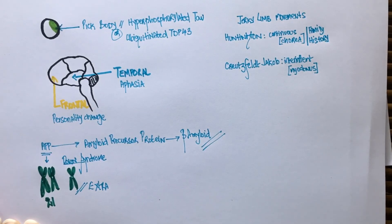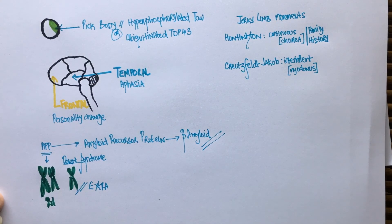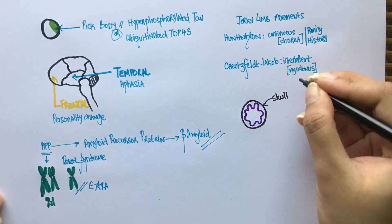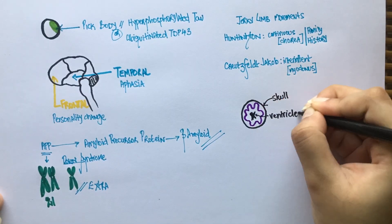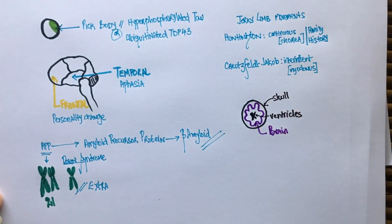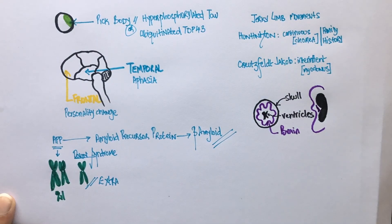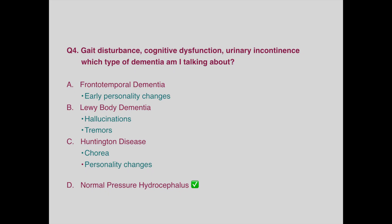In my previous video on dementia, I mentioned an easy way to remember normal pressure hydrocephalus. It is by identifying the triad of gait disturbance, cognitive dysfunction, and urinary incontinence. The enlarged ventricle size in these patients compresses the adjacent brain tissues, leading to the symptoms seen in normal pressure hydrocephalus. Patients with Lewy body dementia might have gait disturbances, but urinary incontinence is not a characteristic feature.